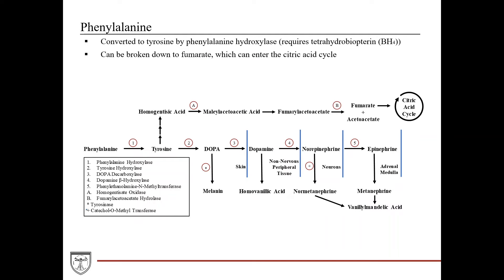This is a figure in your book that outlines the metabolism of phenylalanine and tyrosine specifically. Starting with phenylalanine, it is converted to tyrosine, which is catalyzed by the enzyme phenylalanine hydroxylase, which requires tetrahydrobiopterin, or BH4, as a cofactor.